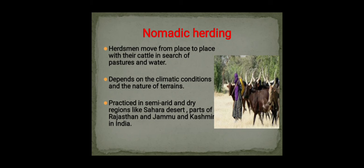Nomadic herding involves herdsmen who move from one place to another with their cattle in search of pastures and water. It mainly depends on climatic conditions and the nature of terrain, and is practiced in semi-arid and dry regions like the Sahara Desert, parts of Rajasthan, and Jammu & Kashmir. Nomadic herders depend on sheep, cattle, goat, and camels; in the tundra region they herd domestic reindeer, and in some areas horses and yaks.